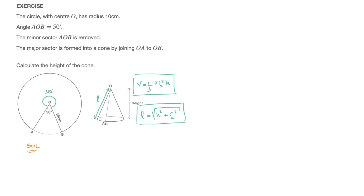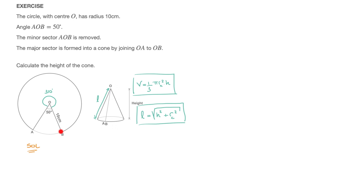Going back to how this cone was made, and looking at the illustration — in particular the line going from OA to OB — we quickly realize that the slant height must equal the radius of our circular sector. This cone is formed by joining OA to OB, so this slant height has to equal the 10 cm radius of our circular sector. We can replace l with 10, giving us: 10 equals the square root of h squared plus the radius of the cone squared. Provided we can find the radius of the cone at its base, we'll be able to rearrange this to find h.